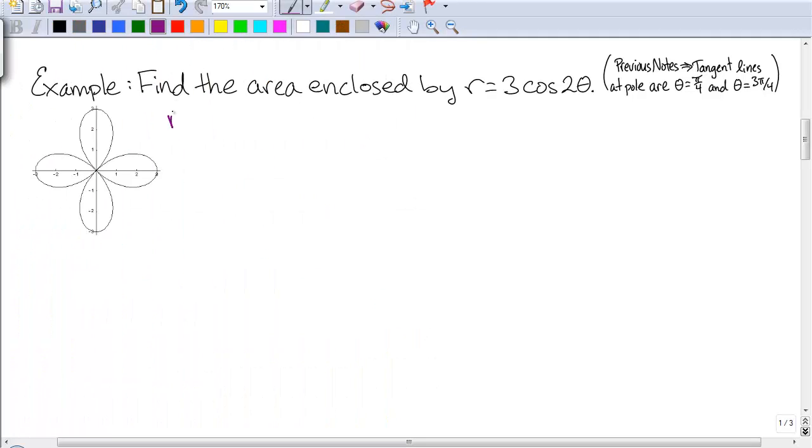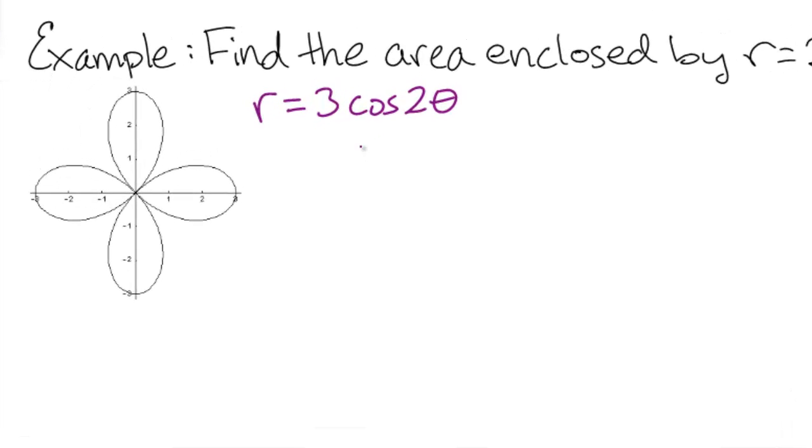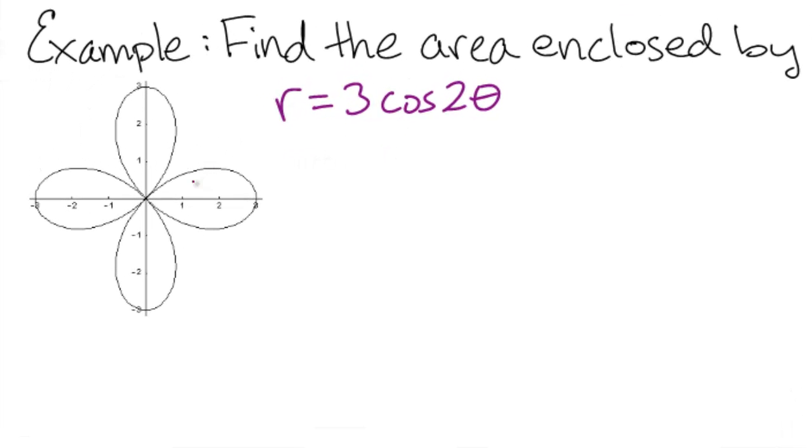In this example, we have r equals 3 cosine 2 theta. The first thing we need to do is figure out where the graph crosses the origin. So to do that, we set r equal to 0 and solve for theta.